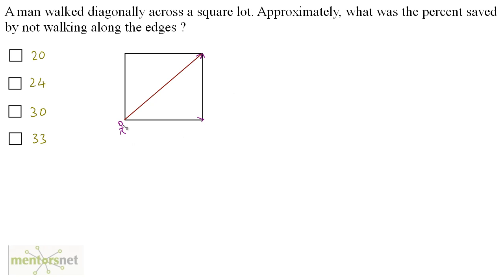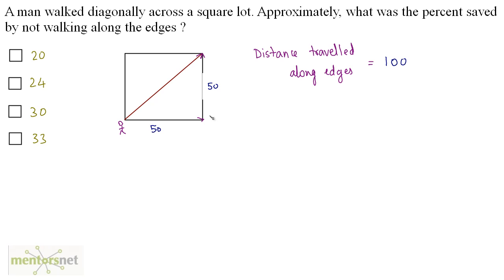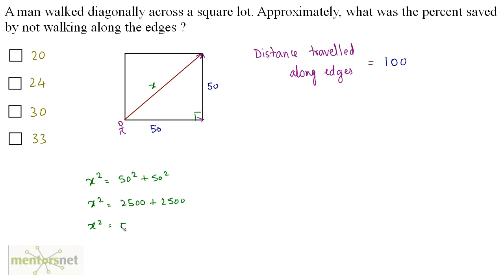Let us assume that if this man walks along the edges, he walks 100 units. So the distance traveled along the edges is 100 units. As this complete distance is 100 units, the man travels 50 units horizontally and 50 units vertically. Let us calculate how much distance he travels when he walks diagonally — call it x. As this is a square, it forms a right-angled triangle, so we apply Pythagoras theorem: x² = 50² + 50² = 2500 + 2500 = 5000.